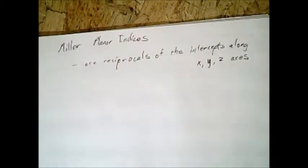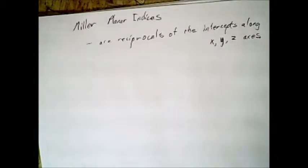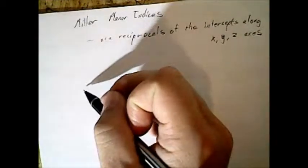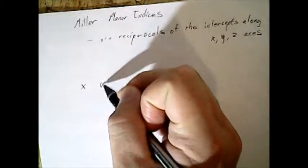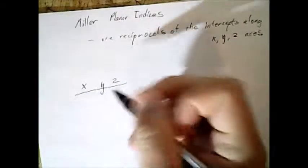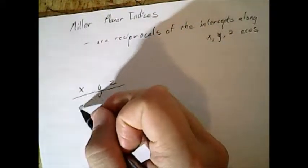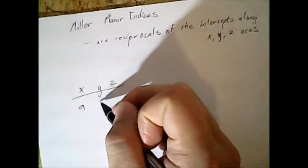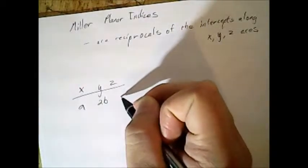So these are actually pretty simple. If you've never worked with planar indices, they're actually almost easier than directional indices. What you do first is set up a chart of x, y, and z, because normally your professor will give you something along the lines of a, 2b, and c.